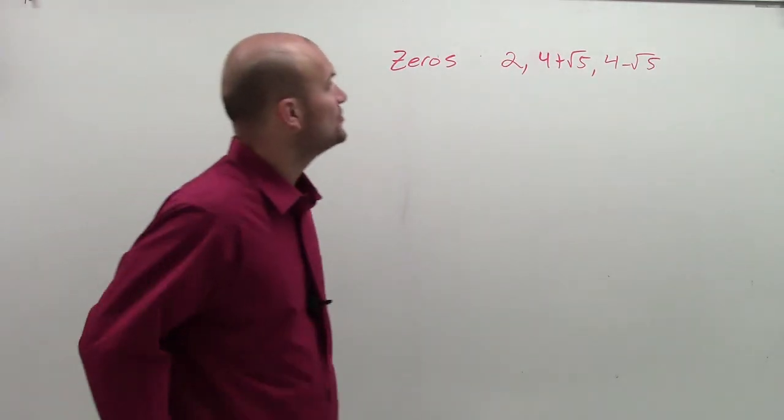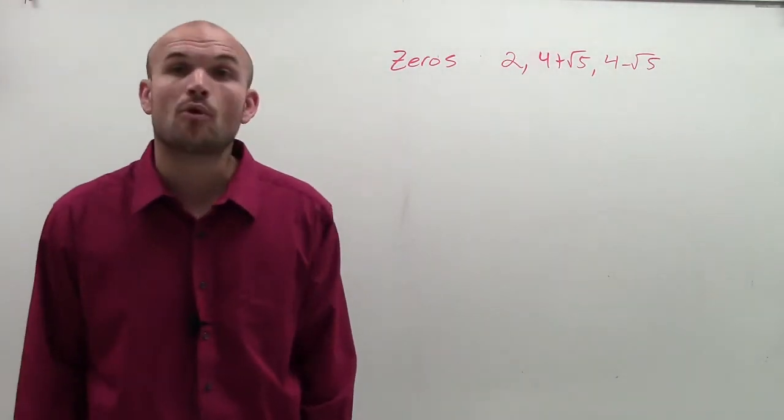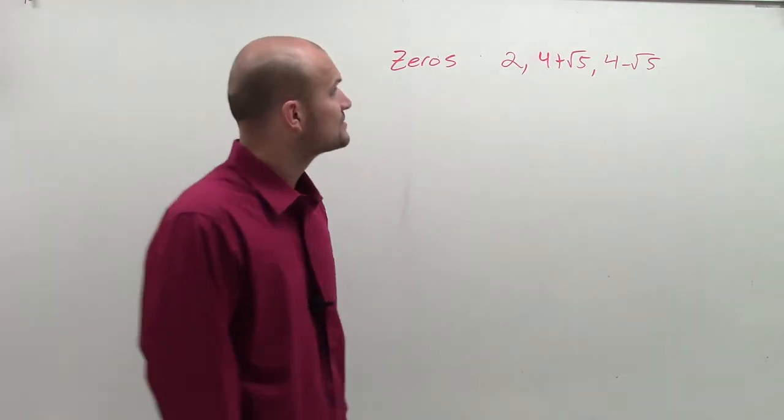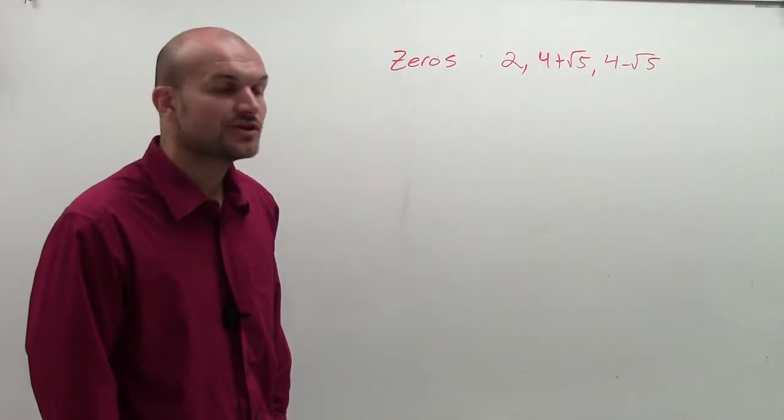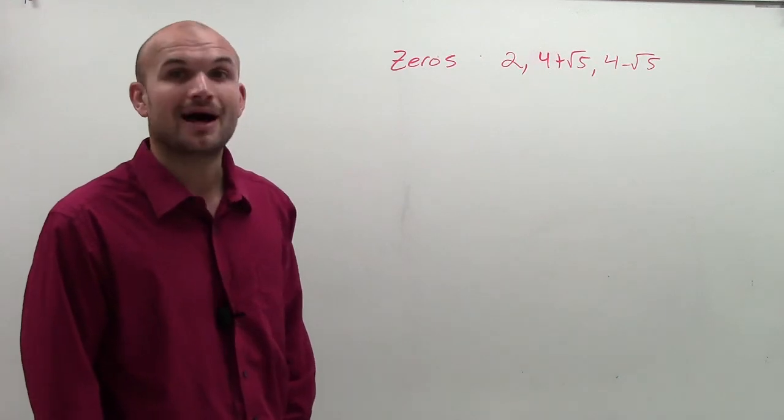So what we have is we have the zeros of 2, 4 plus square root of 5, and 4 minus square root of 5. And what we need to make sure that we do is see if we can find the polynomial.